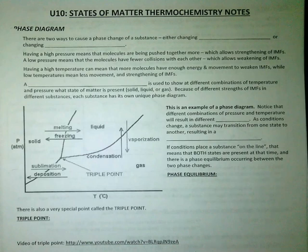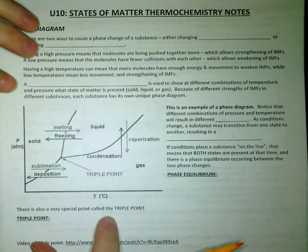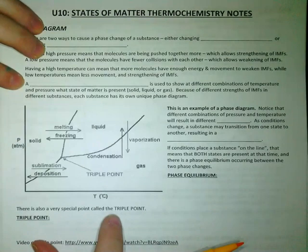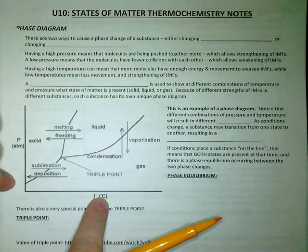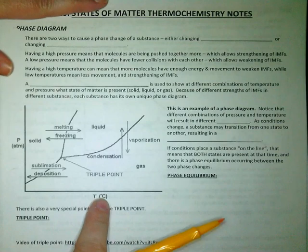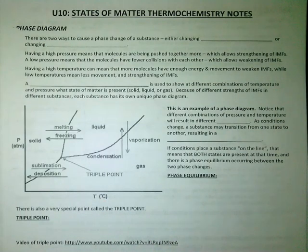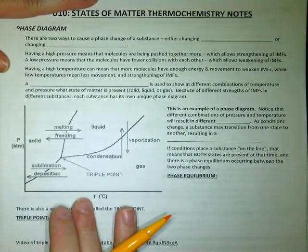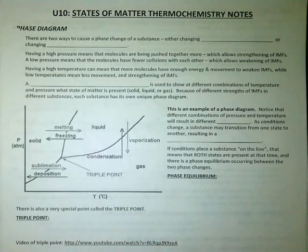This phase change diagram is used to help us determine what will happen at different temperatures and pressures for any given substance. Every substance has its own phase change diagram because every substance responds a little bit differently to temperatures and pressures.